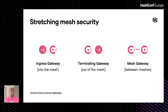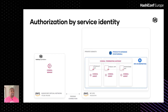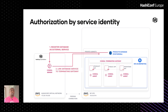Walking through this in our application: we register our database as an external service on the service mesh, then link it to a terminating gateway. By doing this, we can control what services are enabled to access that Postgres database. This is what allows us to expand mesh security to things outside our mesh — taking care of machine-to-machine access using Consul.